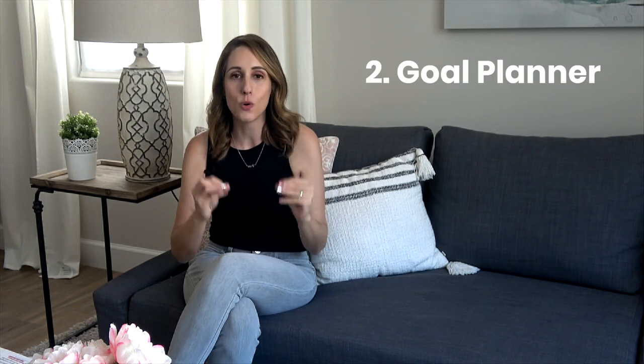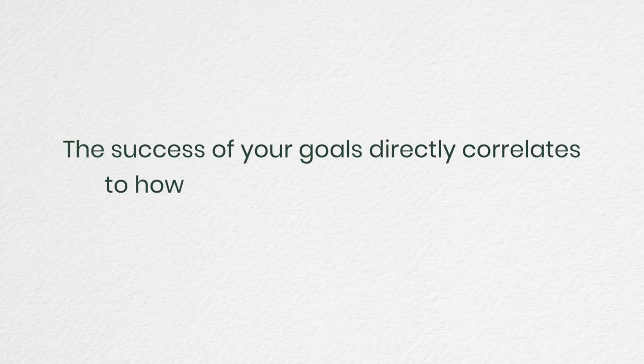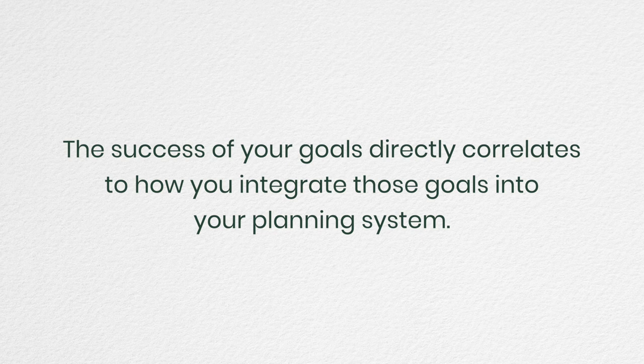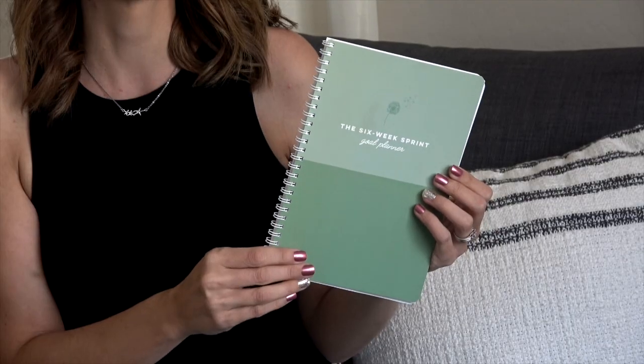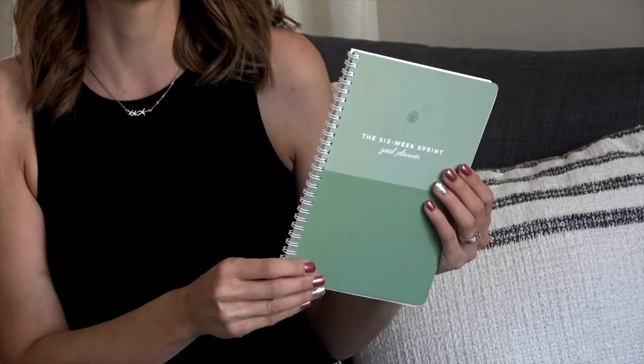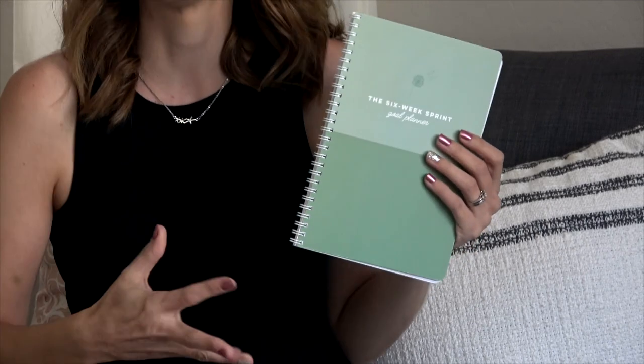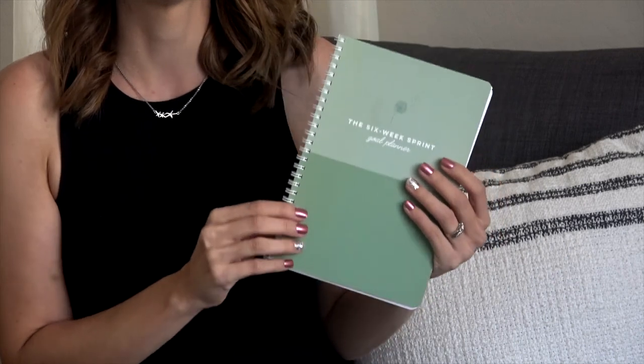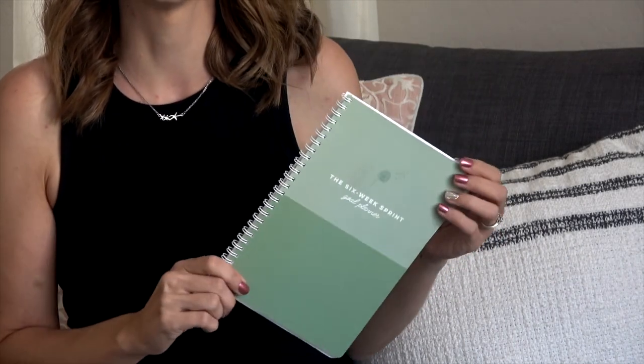Before moving from the big-picture planning of Google Calendar into a more weekly view, I want to insert goal planning here because I think it's so important. The reason people struggle to meet their goals is they don't find a process or a way to integrate the steps of that goal into their weekly and daily task systems. That is why I use a goal planner — the six-week sprint goal planner. I love this method because it's not so long that you lose motivation, and it's not too short like a month. Six weeks is just the perfect sweet spot.